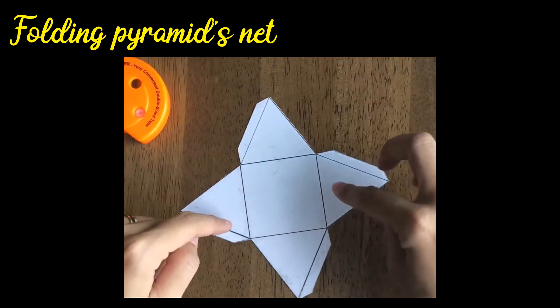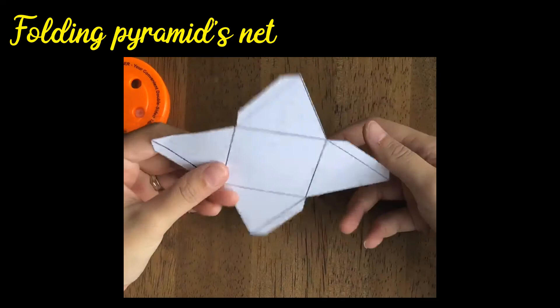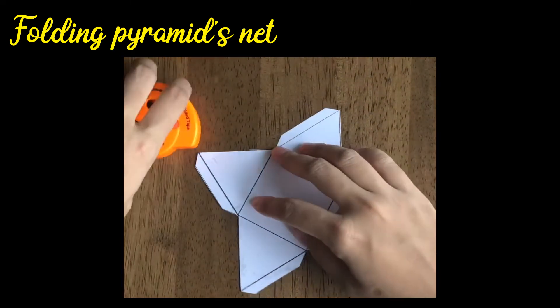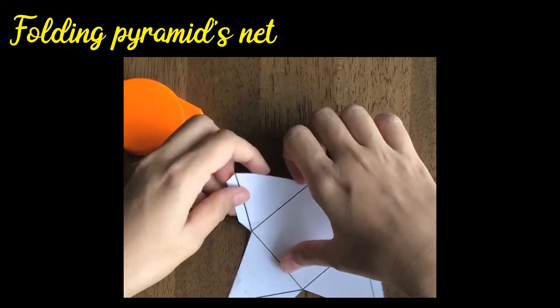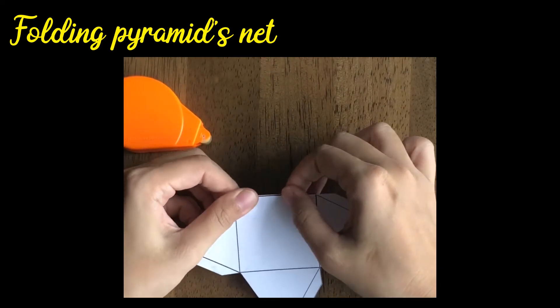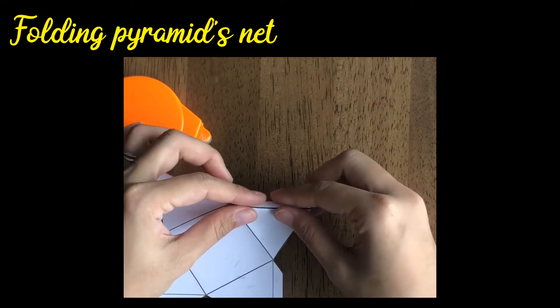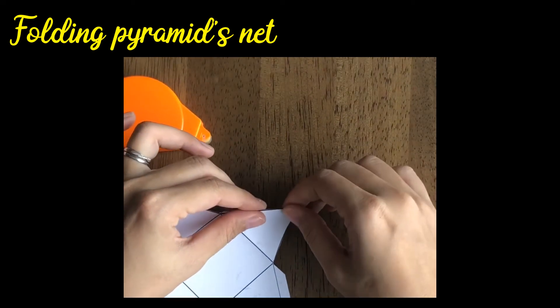In this video, you notice there are 4 triangles and a square. So, fold it first along the black lines. Make sure to fold it straight and nicely.